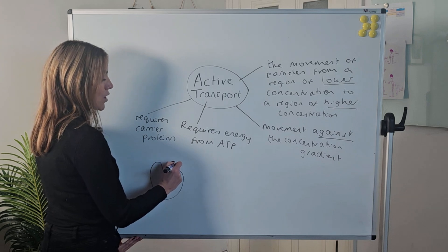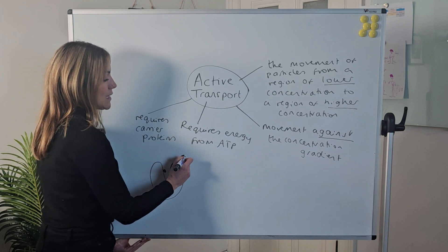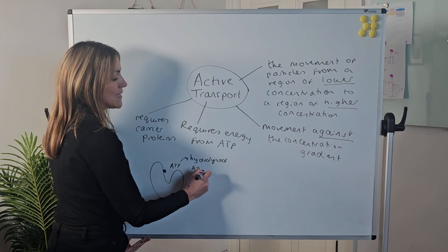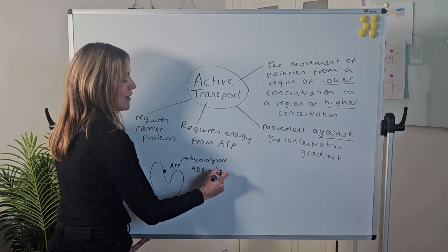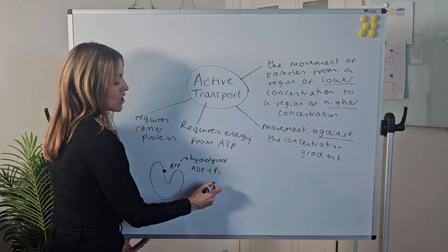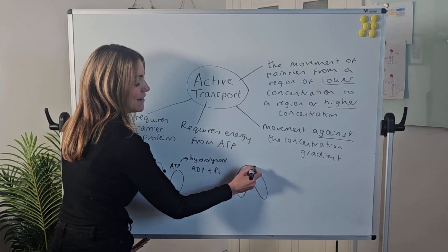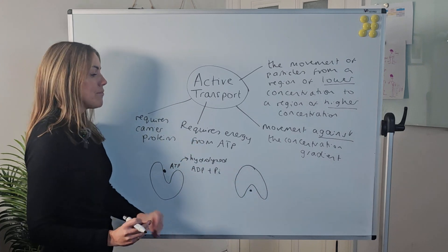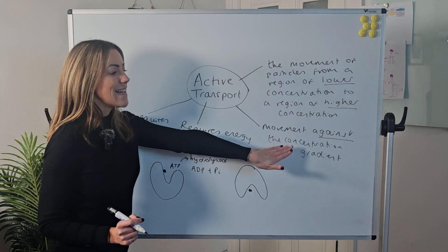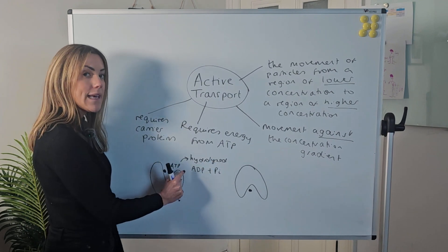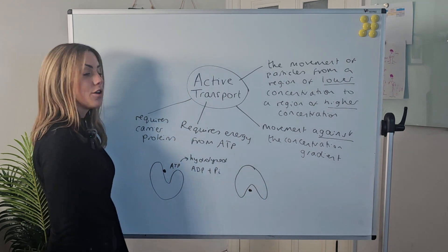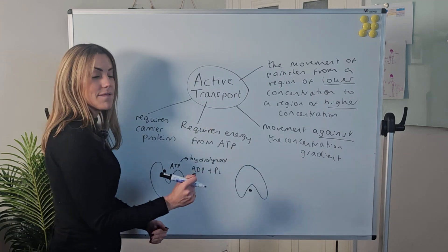A molecule of ATP will also bind to the carrier protein and that ATP will be hydrolyzed to release energy, giving us ADP — adenosine diphosphate — and an inorganic phosphate. That hydrolysis releases energy which causes the carrier protein to change shape, moving the ion from one side of the membrane to the other. Because it's moving against its concentration gradient, the carrier protein needs ATP hydrolysis to provide the energy for that shape change — for example, from outside the cell to inside the cell.